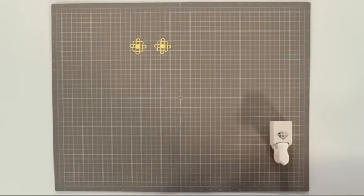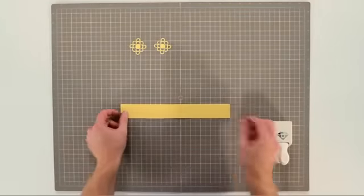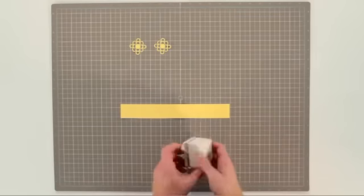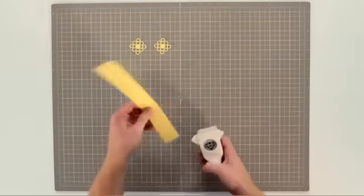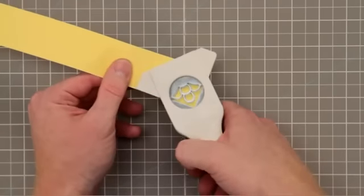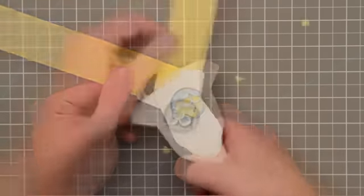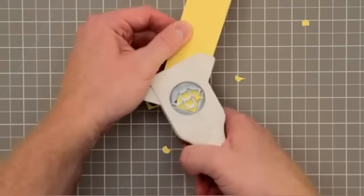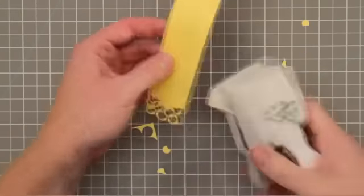To create a small delicate punched medallion, start by cutting a one and a half inch strip of paper or cardstock. Holding the strip in one hand, punch both corners of the strip with the standard punch around the page corner punch.